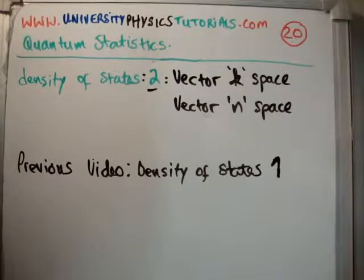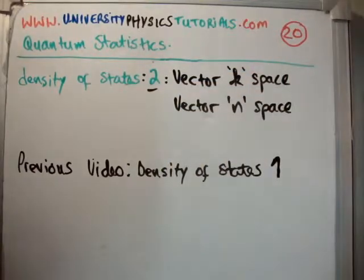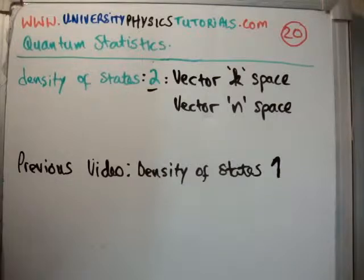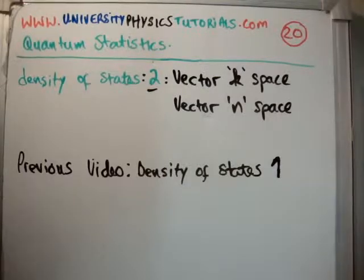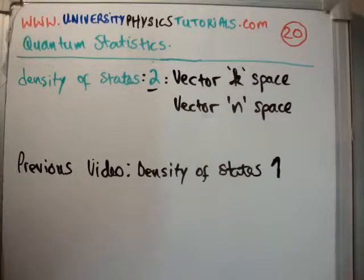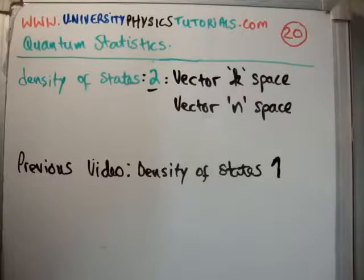In this video I'm going to continue on with my tutorials on quantum statistics. This is video number 20 and I'm going to discuss the density of states. This is the second sub-video in this particular section where I'm going to discuss the vector k-space and vector n-space. The previous video to this is the density of states number 1. I'd also like to remind you that I've set up a website called universityphysicstutorials.com where I've got all my videos listed and archived.